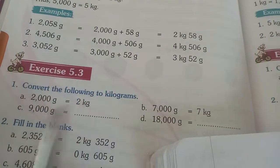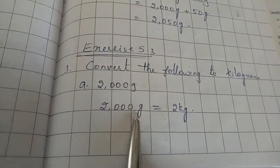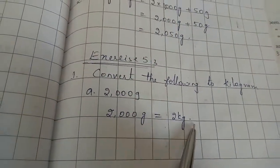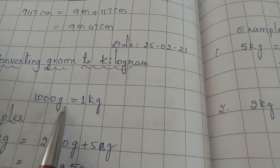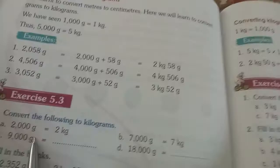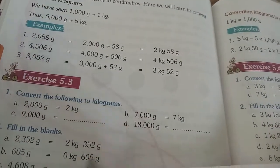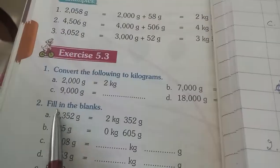Convert the following to kilograms. See — 2000 grams is equal to 2 kg. Yes, very easy! 1000 grams is equal to 1 kg, then 2000 grams equals 2 kg. Same way, you can do B, C, D. Then move on to the next part.